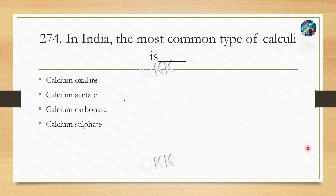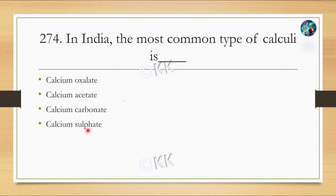In India, the most common type of calculus is: option A, Calcium oxalate; option B, Calcium acetate; option C, Calcium carbonate; option D, Calcium sulfate. The correct answer is Calcium oxalate.